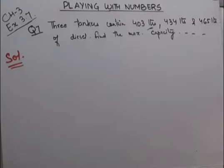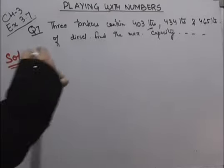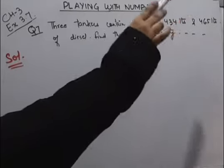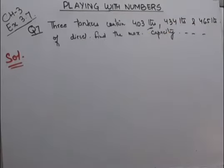So question kya bata raha hai? There are 3 containers. The capacity of the first one is 403 litres, second is 434 litres, third one is 465 litres. We have to find the capacity of a container which can measure all 3 of them in exact number of times.